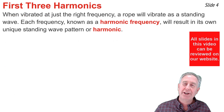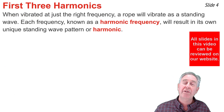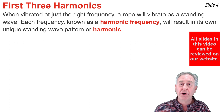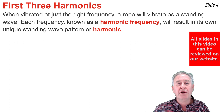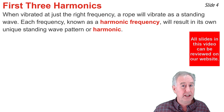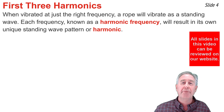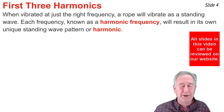When vibrated at just the right frequency, a rope, a string, or wire will vibrate as a standing wave. There are a number of just-right frequencies that will cause that rope, wire, or string to vibrate with a standing wave, and we refer to each of these frequencies as harmonic frequencies. The pattern of vibration of the rope is known as the harmonic wave pattern.